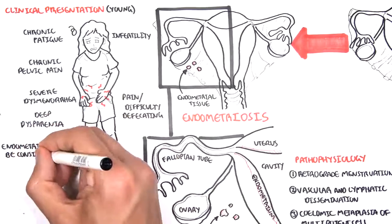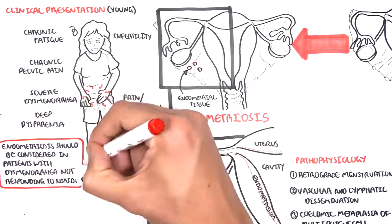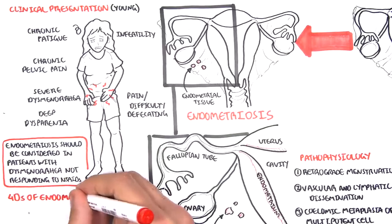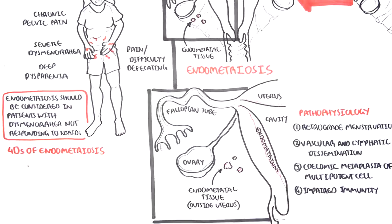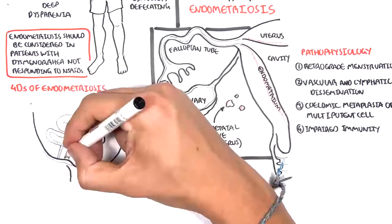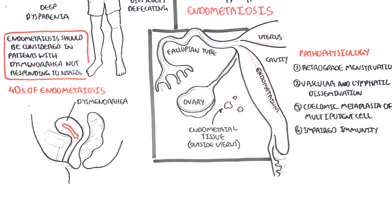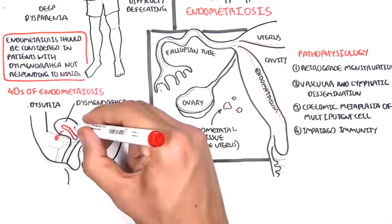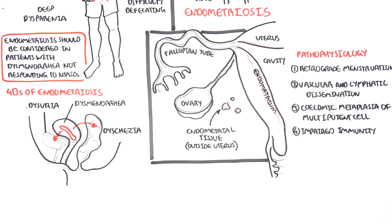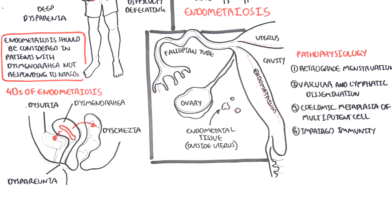Endometriosis should be considered in any female patient with dysmenorrhea who is not responding to non-steroidal anti-inflammatory drugs. It's good to remember the symptoms as the four Ds. Looking at a sagittal section of the female pelvis: the first D is dysmenorrhea — painful, heavy bleeding. Dysuria — pain urinating, if there is ectopic endometrial tissue on the bladder. Dyschezia — pain and discomfort upon defecation, usually if there's ectopic endometrial tissue on the bowel or rectal area. And the final D is dyspareunia — pain during sexual intercourse.